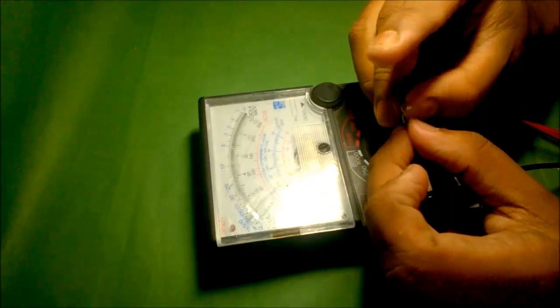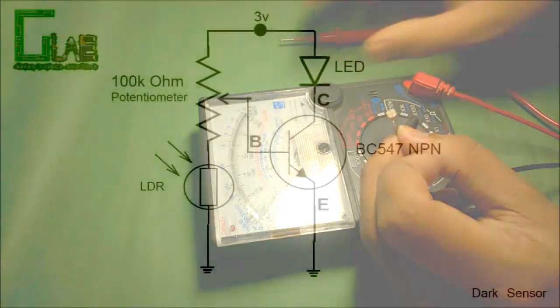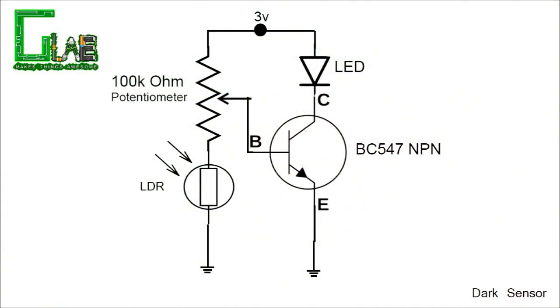So the LDR is perfect for a light sensor. Here is the schematic for this project. It's so easy and you can make it in just 5 minutes.